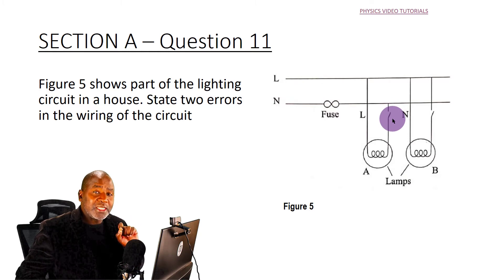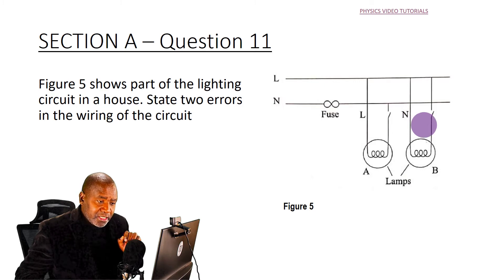So that one is an error. Is it the case with the switch in lamp B? I can see that this line is connected to the live wire, so I can't say there is anything wrong here. There is nothing wrong here.